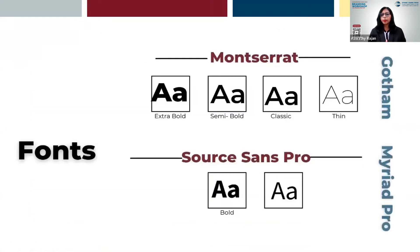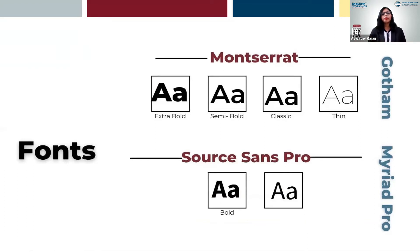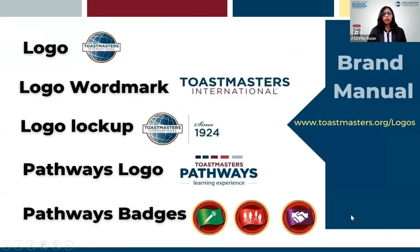Now coming to fonts — we have two major fonts in our brand manual: Gotham and Myriad Pro. These are available in PowerPoint, but since today we're working in Canva, the alternate for Gotham is Montserrat, which is available in the free version of Canva. The alternate for Myriad Pro is Source Sans Pro. Other than these fonts, we are not supposed to use any others.